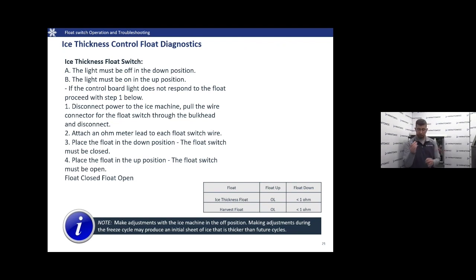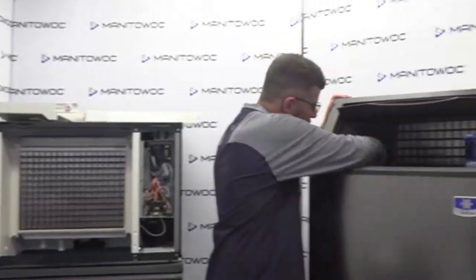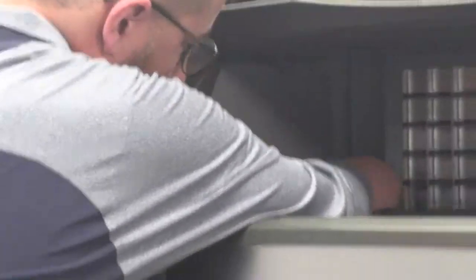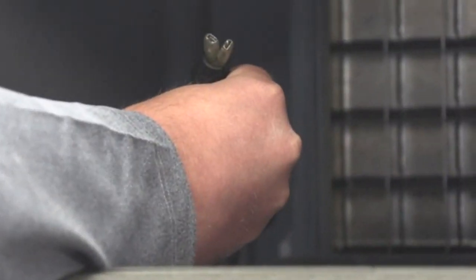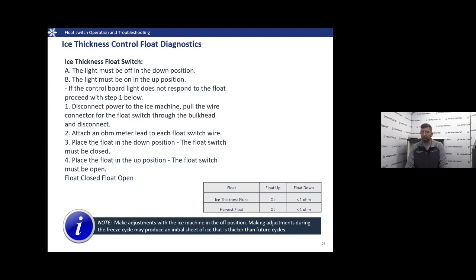Pull the connector through and you'll have access to your wires. Attach your meter leads to each float switch wire. Place the float in the down position — you should get a closed reading. Then move it up and you should get an open reading. Typically, when the float is up, you'd read open line or infinite; when the float is down, you'll typically read less than one ohm. Consistency is key — you want to see the same result each time. On the phones, you'll hear people tell you to do it 15, 20, 30 different times just to be sure you're seeing what you expect to see.